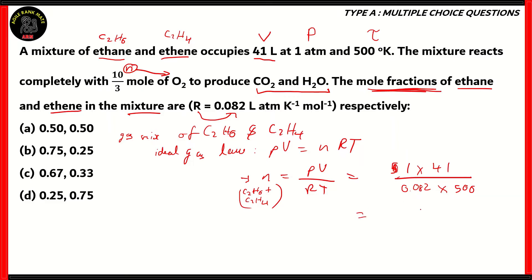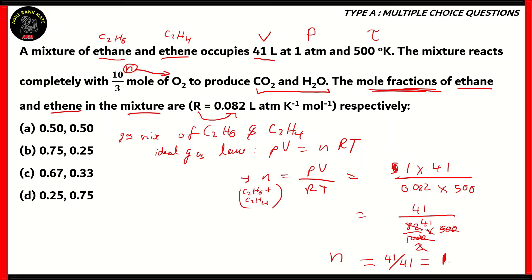We can convert the decimal to a fraction. We get 41 in the numerator, and in the denominator we get 82/1000 times 500. 500 goes into 1000 twice. 82 divided by 2 gives you 41. Therefore, the number of moles is 41 upon 41. When the numerator and denominator are the same, the fraction equals 1. So the number of moles of the mixture of C2H6 and C2H4 is 1 mole.